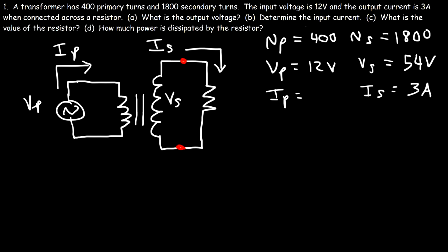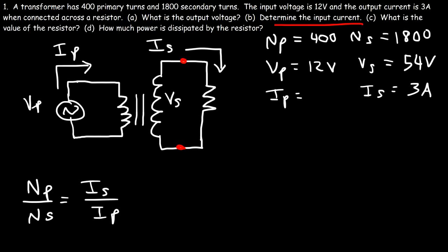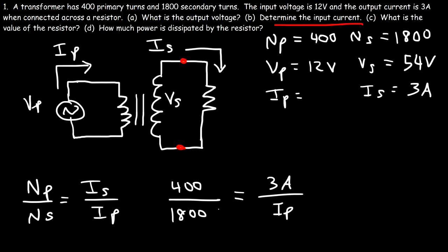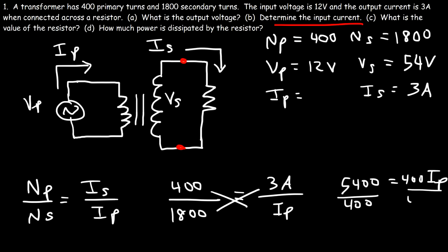Part b: determine the input current. Using NP/NS = IS/IP, since current and number of turns are inversely related: NP is 400, NS is 1800, IS is 3 amps. Cross-multiplying: 1800 times 3 equals 5400, which equals 400 times IP. Dividing both sides by 400 gives IP = 13.5 amps.